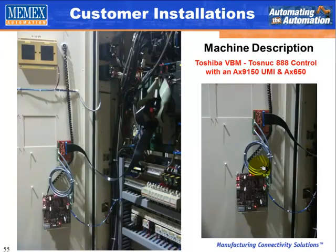The next installation is an example with the universal machine interface using the AX650 board on the Toshiba VBM Tosnock 888 control. We pull the ribbon cable directly from the machine, plug it into the board, extract those signals, and we're done. Easy to install, inside the cabinet, magnetic mount — not a trouble whatsoever.